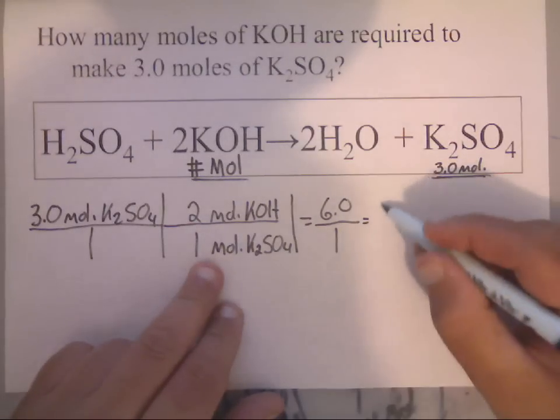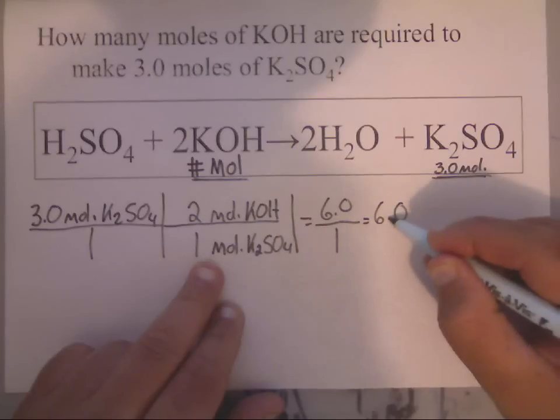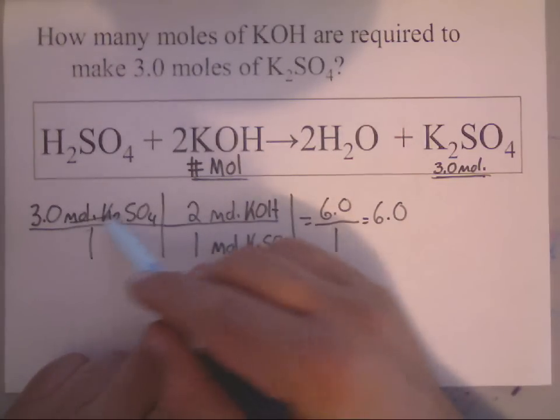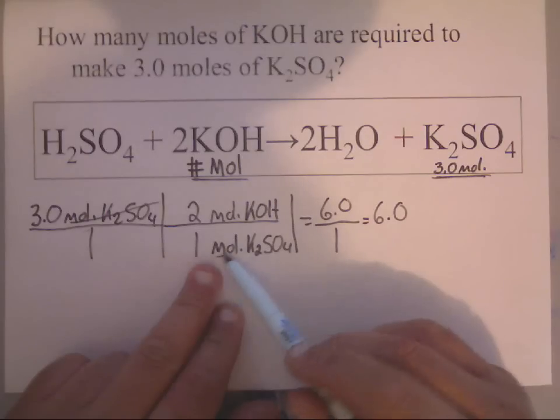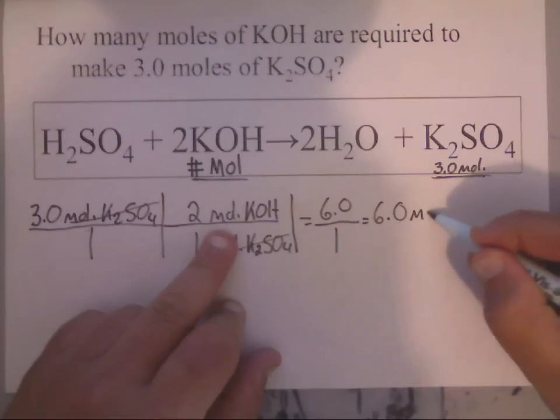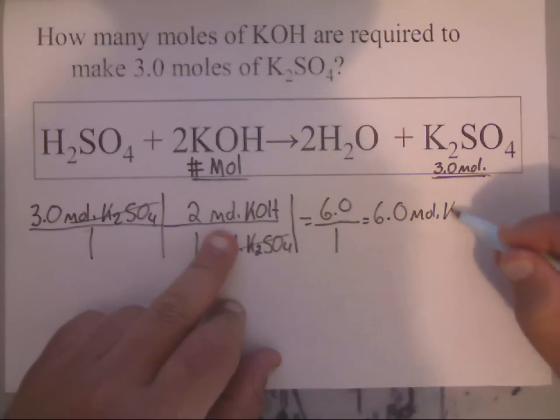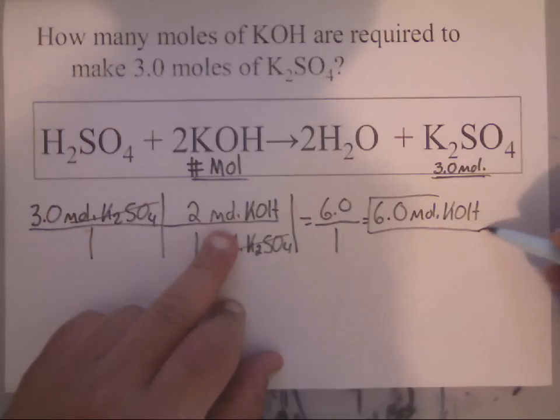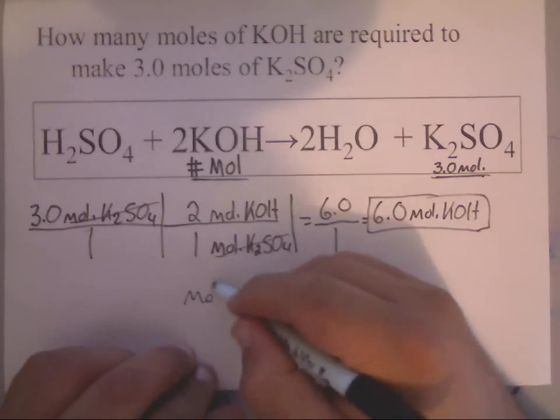So, the molar ratio allows you to switch from the different compounds or even elements in a balanced equation. And that is a huge advantage. Now, after that, we have 3.0 times 2 is 6.0 over 1 times 1 is 1. So, my answer ends up being 6.0. But, 6.0 of what?